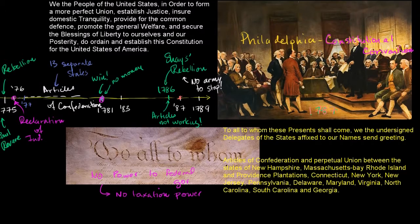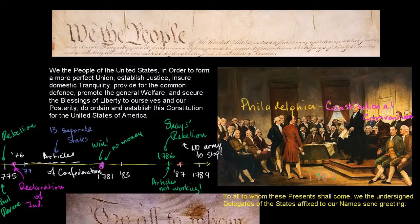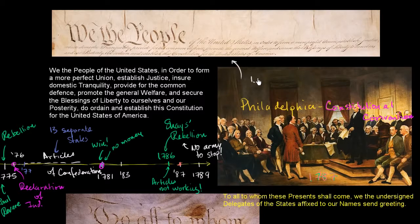They were able to come up with a solution. It was a difficult problem: big states wanted proportional representation in a new Congress, while small states wanted equal votes per state. Ben Franklin again worked out the compromise — they'd have both a House and a Senate, with equal votes per state in the Senate and proportional representation in the House. They all agreed and signed this new Constitution, which would give taxation authority to the federal government and to a new Congress.